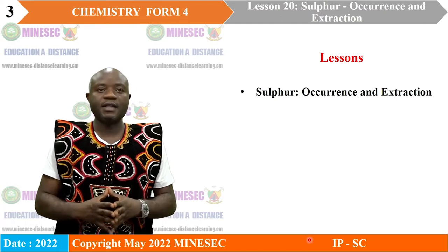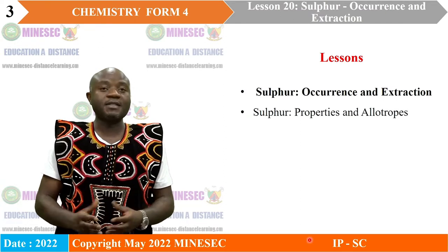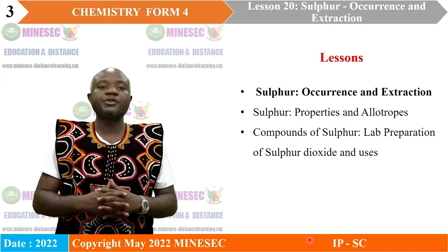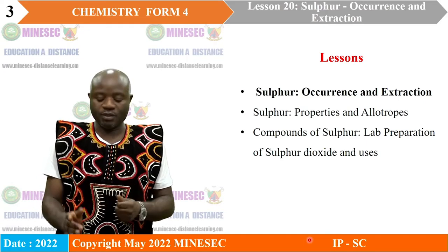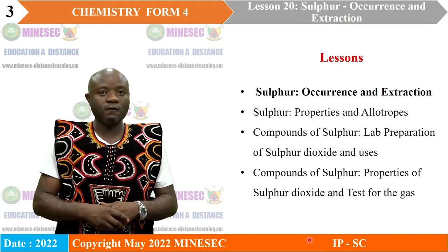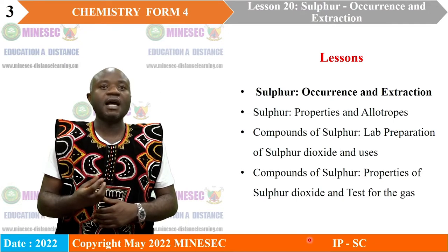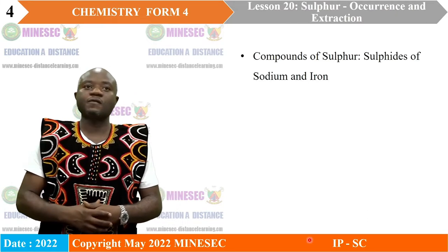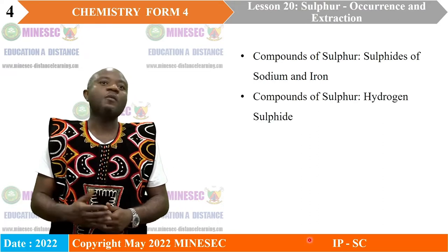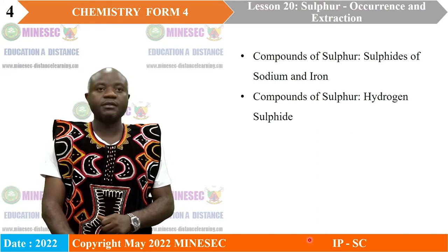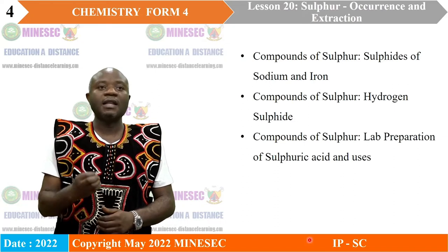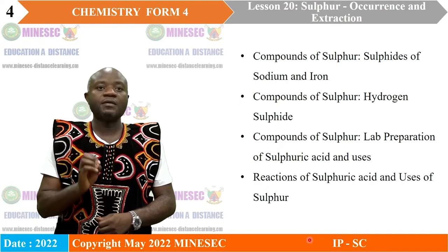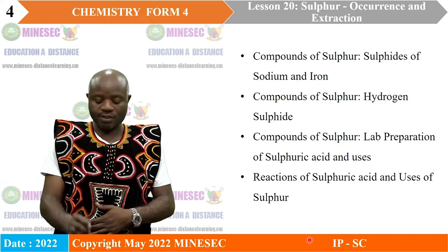Sulfur: Occurrence and Extraction. Sulfur: Properties and Allotropes. Compounds of Sulfur: Laboratory Preparation of Sulfur Dioxide and Uses. Compounds of Sulfur: Properties of Sulfur Dioxide and Test for the Gas. Compounds of Sulfur: Sulfite of Sodium and Iron. Compounds of Sulfur: Hydrogen Sulfide. Compounds of Sulfur: Laboratory Preparation of Sulfuric Acid and Uses. And Reactions of Sulfuric Acid and Uses of Sulfur.